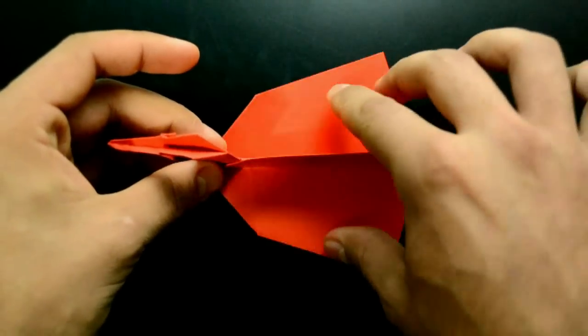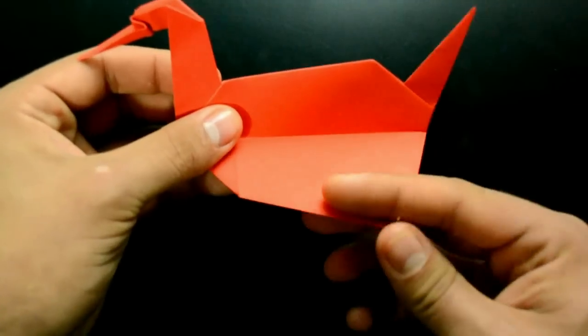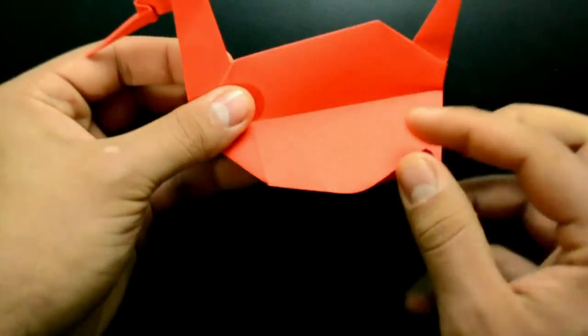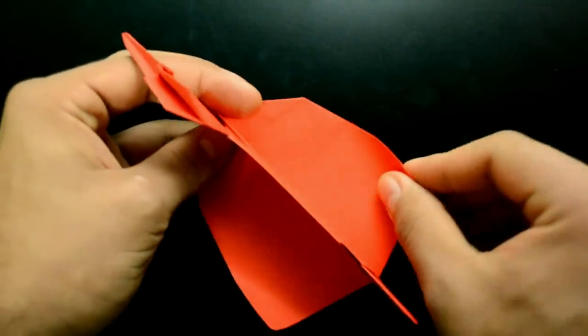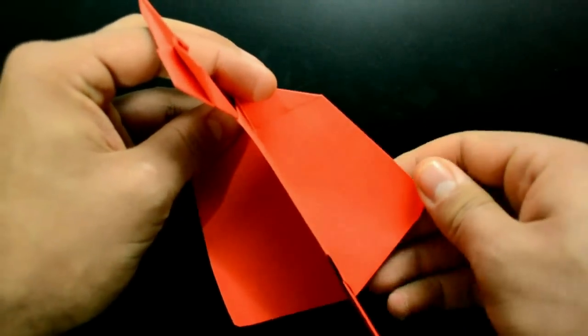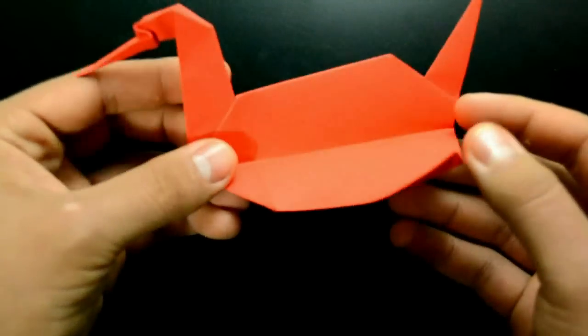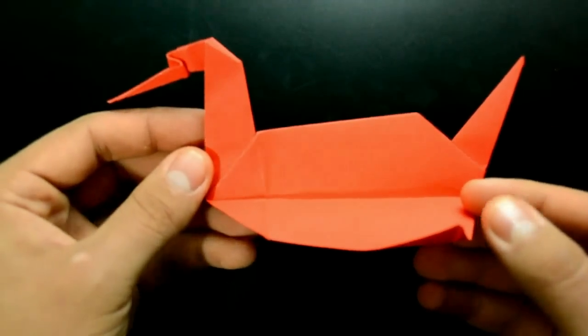We need to open the wings. And make a little detail. And our origami swan ends like this.